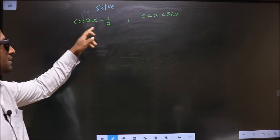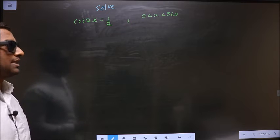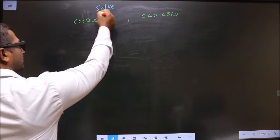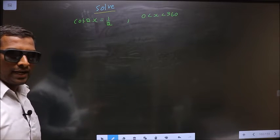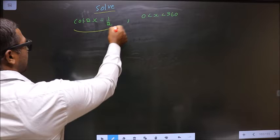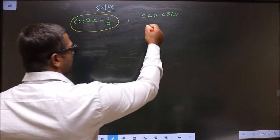Solve cos 2x equals 1/2 where x lies in the interval 0 to 360 degrees. To solve means you should find the values for x satisfying this equation that lie in this interval.